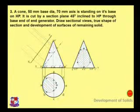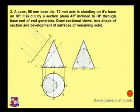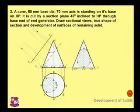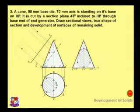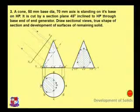Draw lines perpendicular to x1y1 from all their respective points. Then measure the distance of the top view from the XY line — that is, the distance between the XY line and point a. Measure this distance with the compass and put it over here. The distance between these two points should be similar.